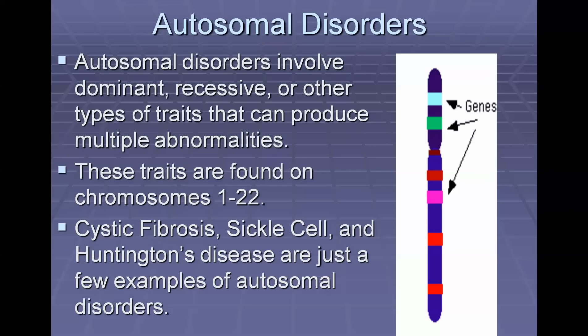Autosomal disorders are going to involve a couple of different types. They can be dominant, recessive, or other traits, and they're going to be occurring on our autosomal chromosomes, which are chromosomes one through 22. These can include cystic fibrosis, sickle cell, and Huntington's disease, but there are many, many more different types.